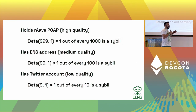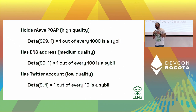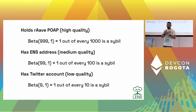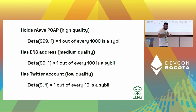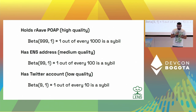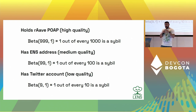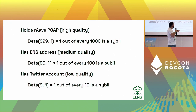To give some concrete examples of potential signals: a really high quality signal is do you have a PoAP from Rave? This is a very difficult-to-Sybil signal — maybe one out of every thousand users who have this PoAP are Sybils. That's pretty high quality, versus something like having an ENS address, which is medium-hard to Sybil because you still have to pay for it, but anybody can get many ENS addresses. The way to think about the alpha parameter is that it's the number of non-Sybils in your sample. You fix the beta parameter to 1 and adjust the alpha parameter accordingly to match your real intuition — like one in a thousand are Sybils, or one in a hundred, or one in ten.